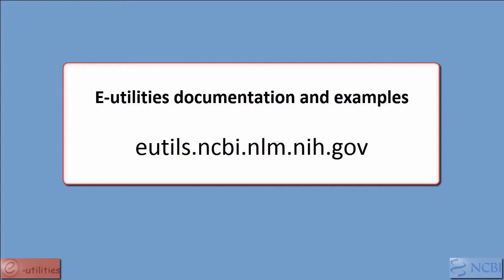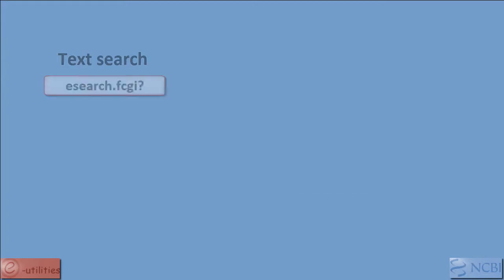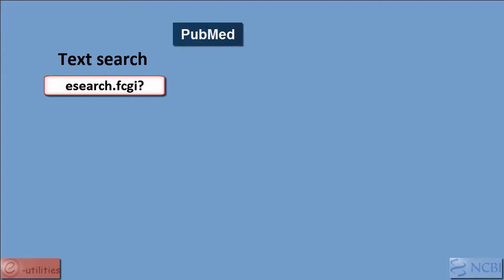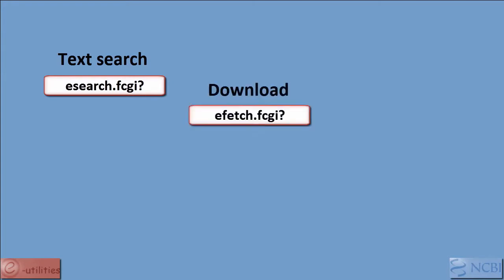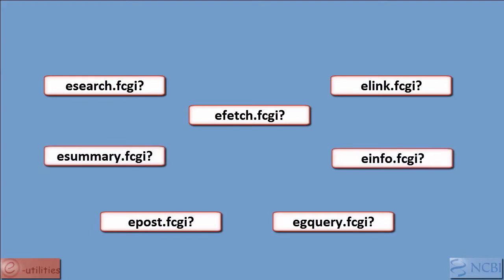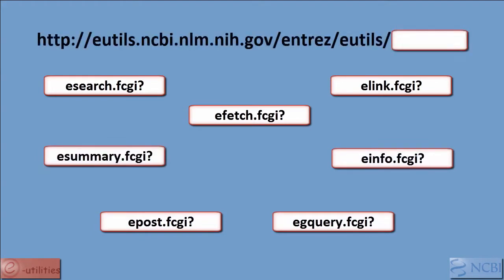The e-Utilities give your code access to all of the major functions of Entrez, including text searching in databases such as PubMed, Nucleotide, or Gene, downloading records in various formats, and linking between records in different databases. There are seven e-Utility CGIs, all sharing the same base URL.